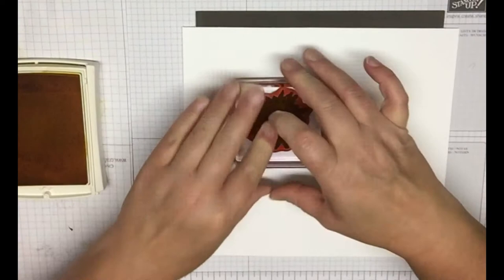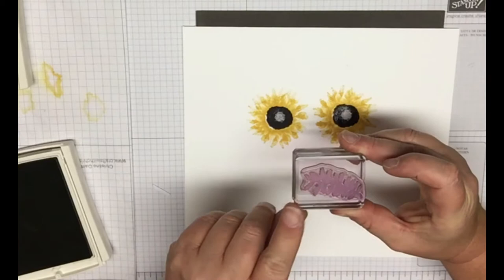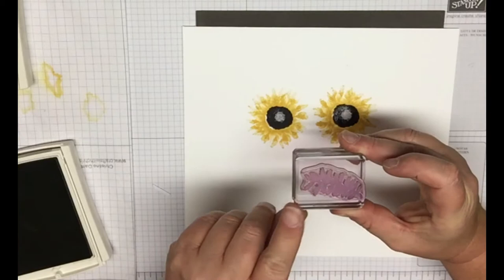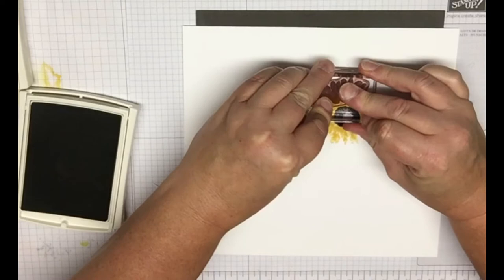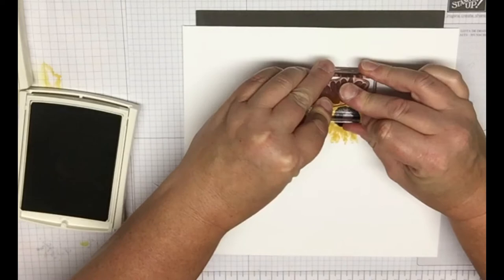The next part is going to use the solid fern. You're going to take Crumb Cake and we're just going to stamp this right around his eyes. Put it on the yellow a little and just go around his eyes.